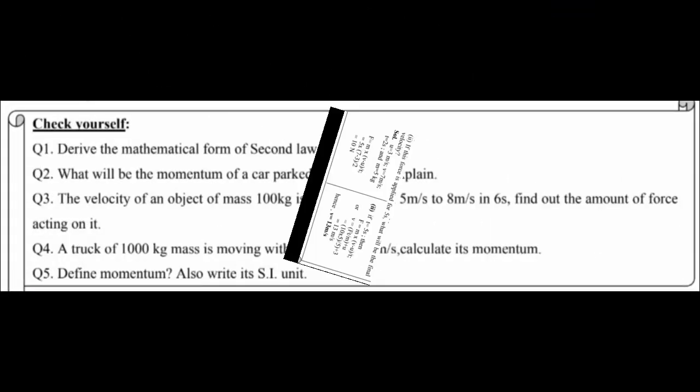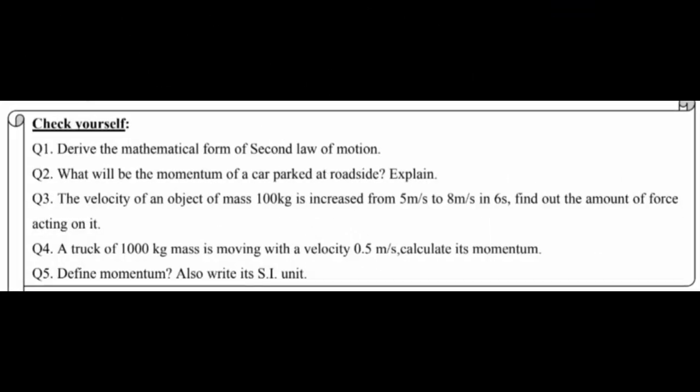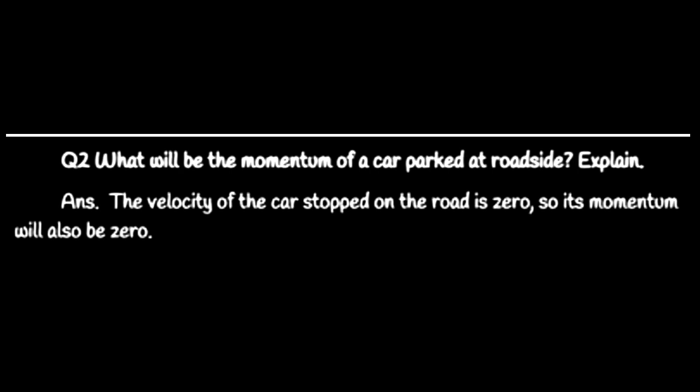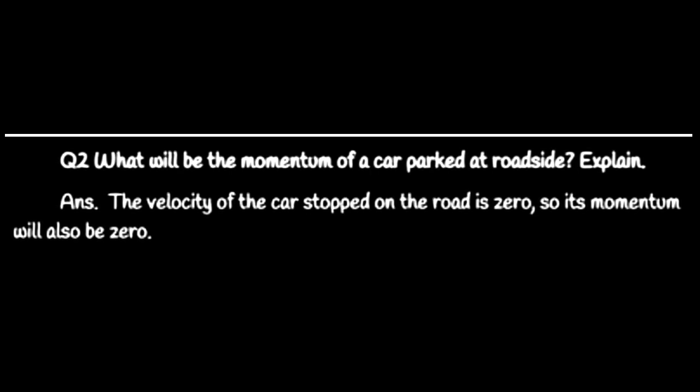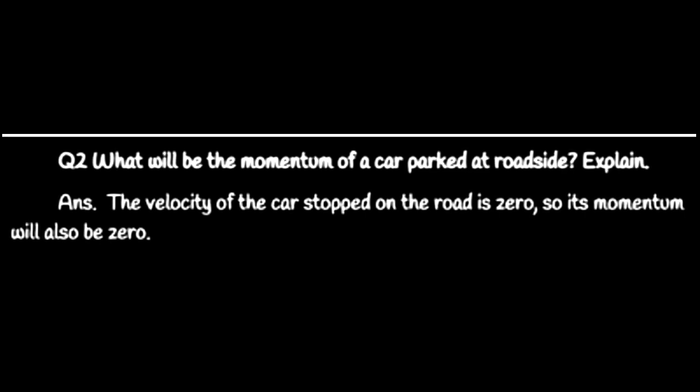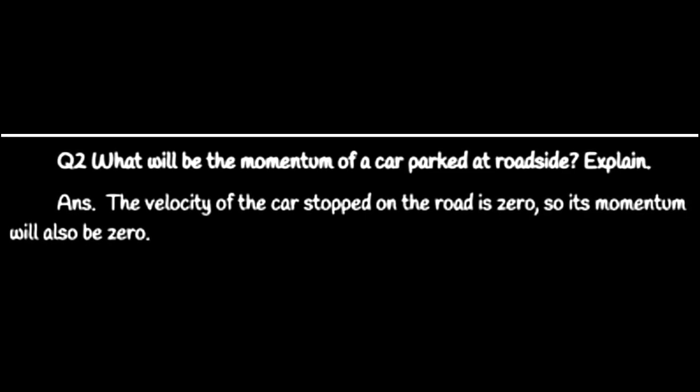Let us discuss some questions. Derive the mathematical form of second law of motion - you can write this as I have already explained. What will be the momentum of a car parked at roadside? Explain. The velocity of car stopped on the road is zero, so its momentum is also zero.